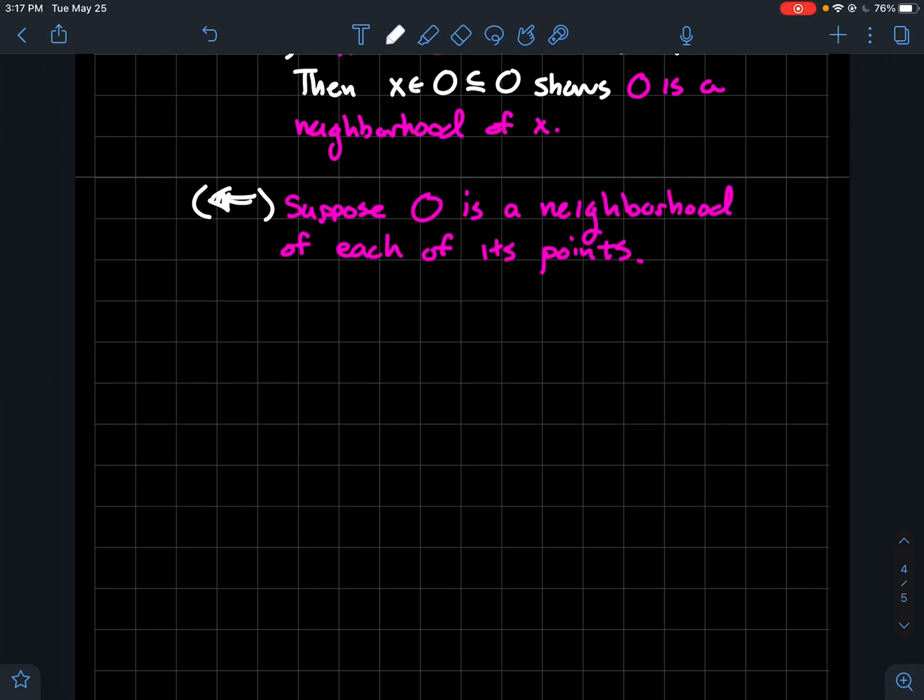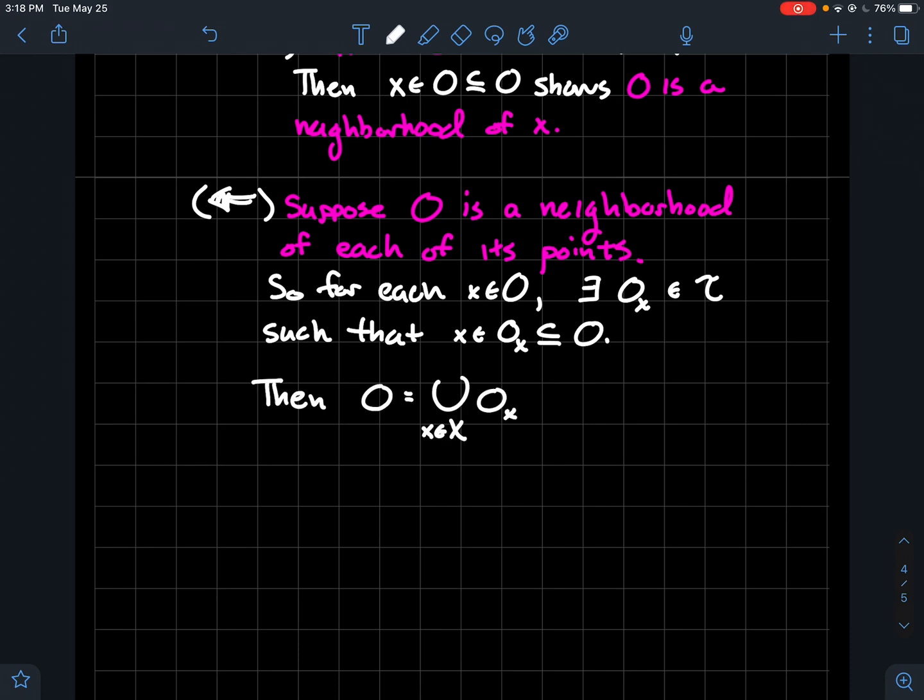So suppose that O is a neighborhood of each of its points. So for each element of O, there should exist some open set. We'll call it O with a subscript x, right? So maybe I need a different open set for a particular element x. In other words, maybe the same O won't work for each element. But the point is, for each element, you could find an open set. So I've got O_x here that's open, such that x is in O_x. And O_x is contained in O. So that's just using our definition, our orange definition from above about neighborhoods. You might rewind in case you forgot that.